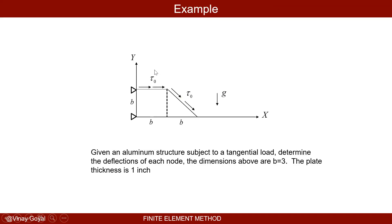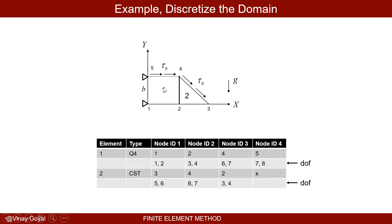First step: let's discretize this domain. We divide the domain into a square element (element one) and a triangular element (element two). I'll select a Q4 element for the square. I'm numbering the nodes one, two, three, four, five — you can number them any way you want, but the connectivity must be correct.